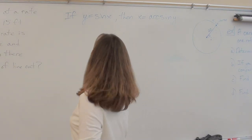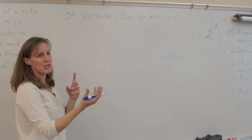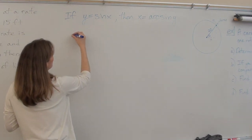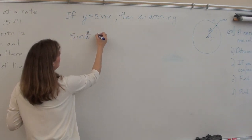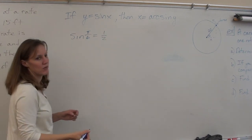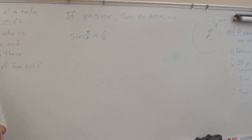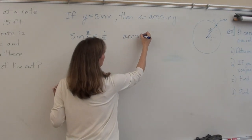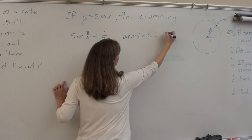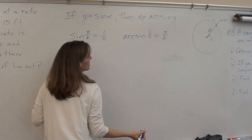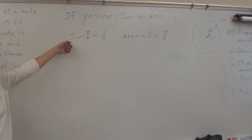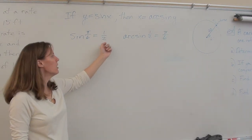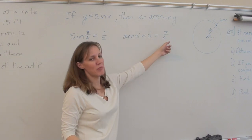Just so you understand how this works: suppose we know sine of π/6 is 1/2. That means the arc sine of 1/2 is π/6. The input for sine is an angle and the output is a ratio. For the arc sine, the input is the ratio and the output is the angle.